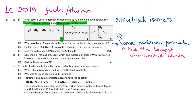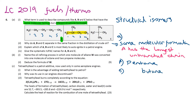Now give the systematic IUPAC naming for A, B and C. A has got 5 carbons all on a straight chain, no double bonds or triple bonds, so 5 carbons is 'pent-', it's an alkane, so it's pentane. B has got 4 carbons in its longest unbranched chain, so the stem of that name will be butane. There is one carbon with 3 hydrogens coming off the second carbon, so that is going to be 2-methylbutane.